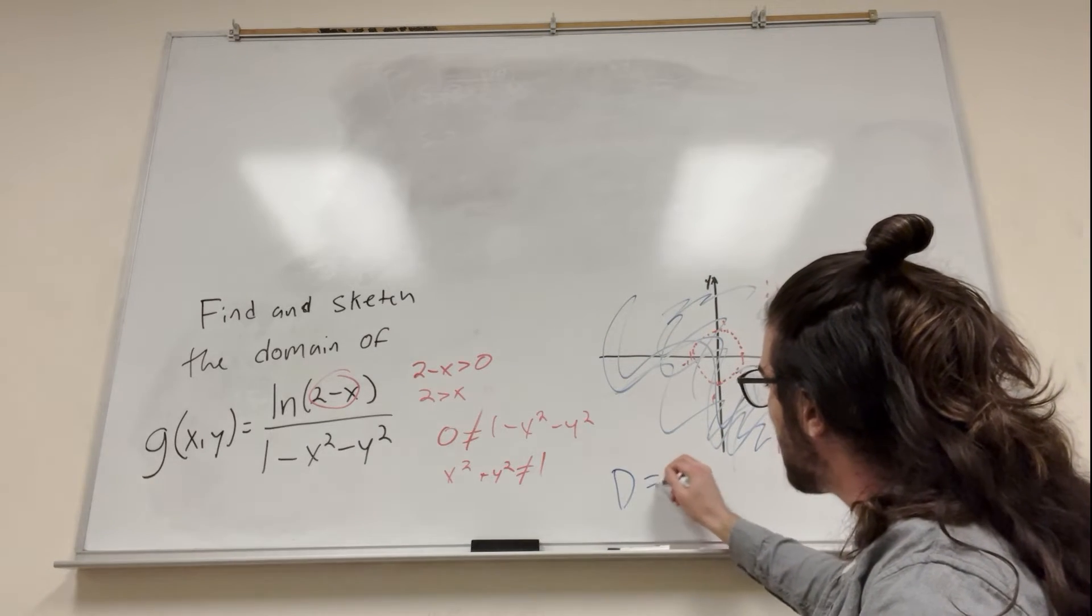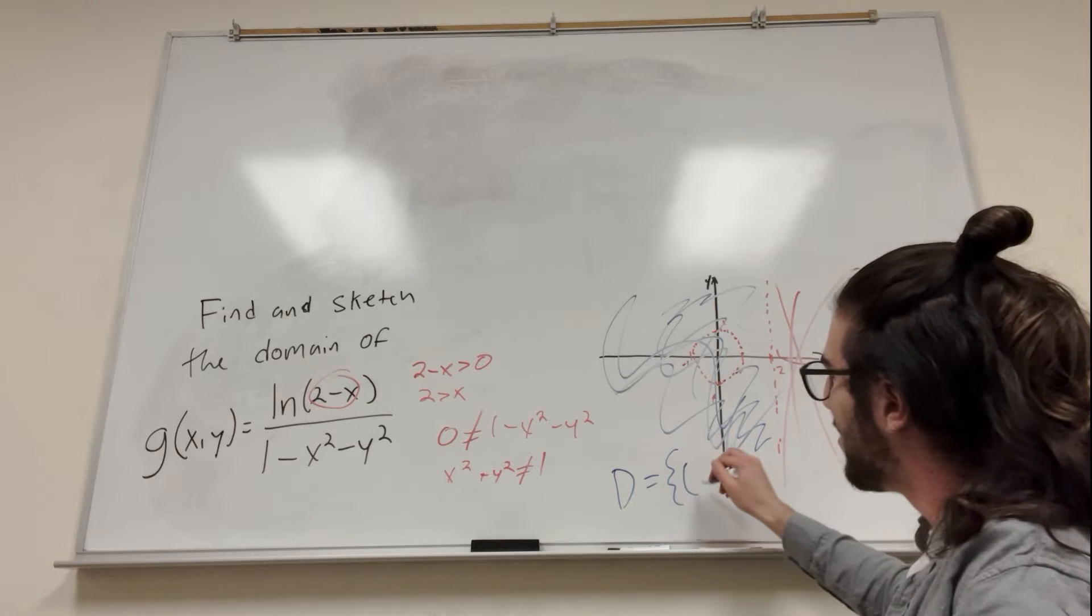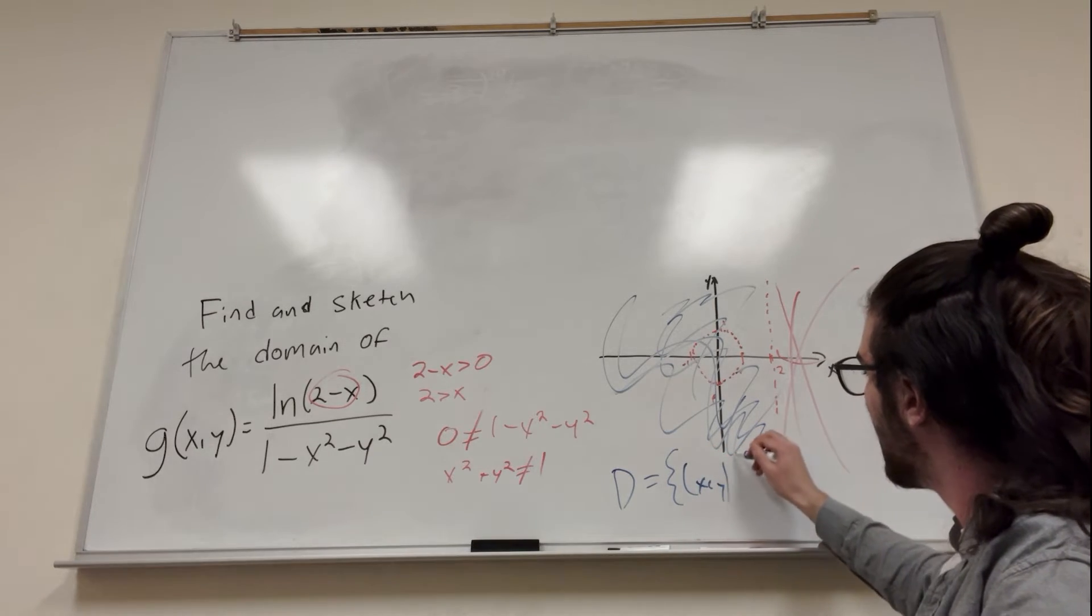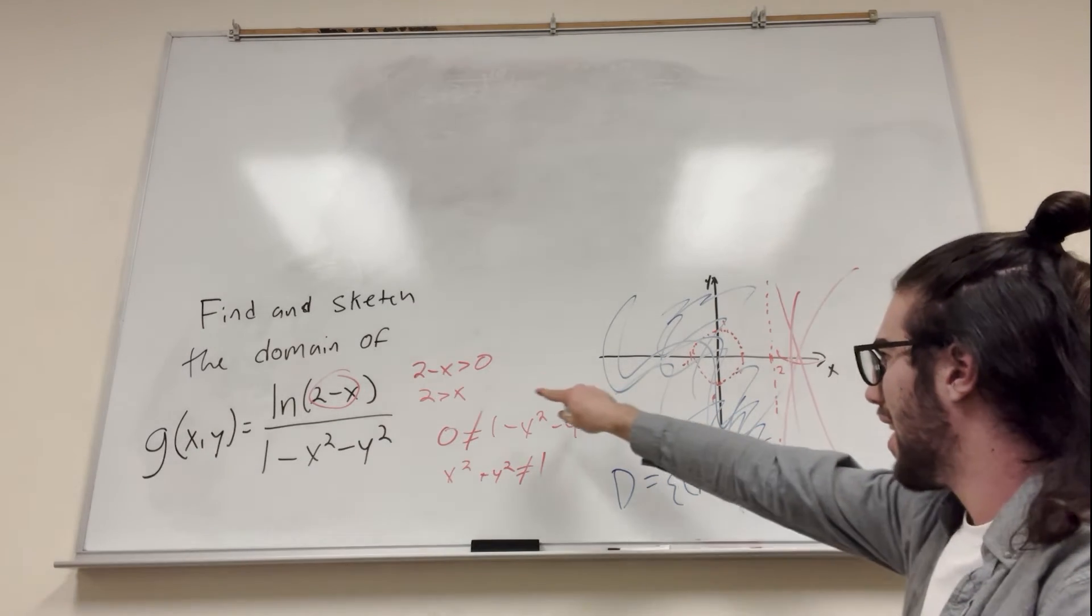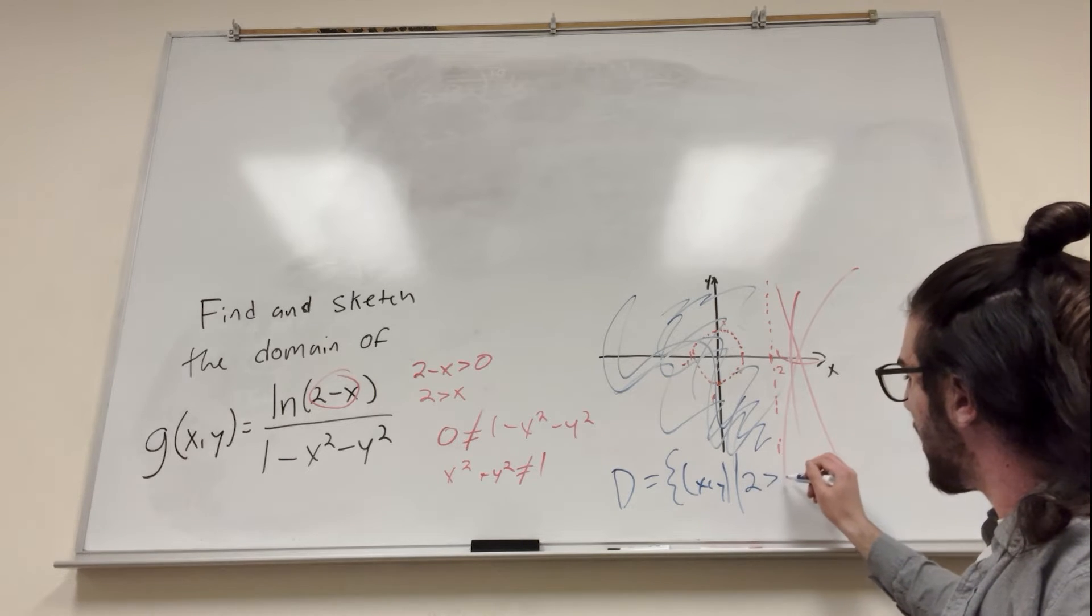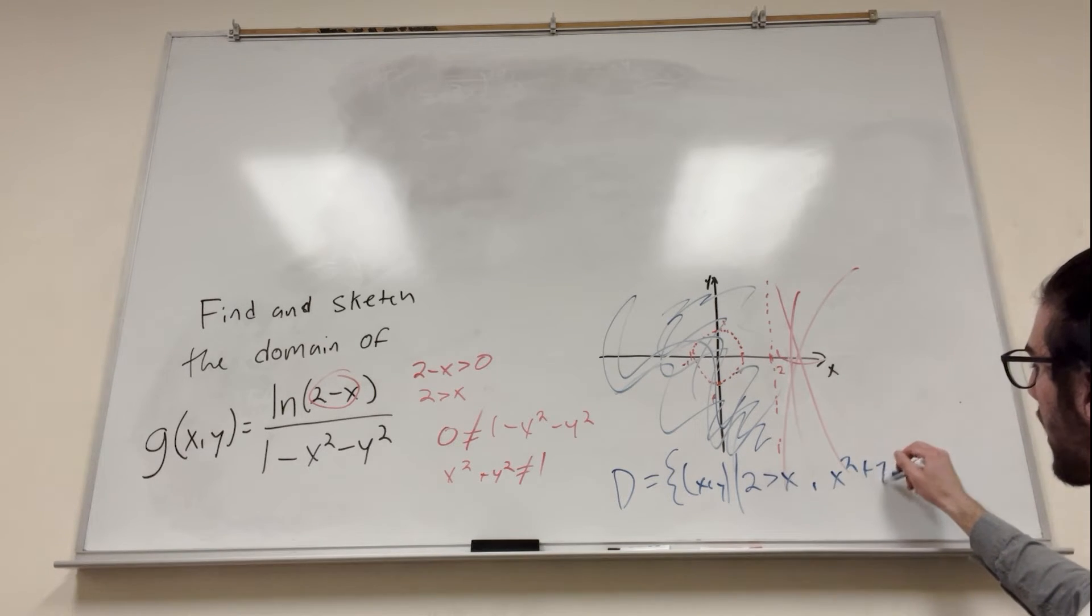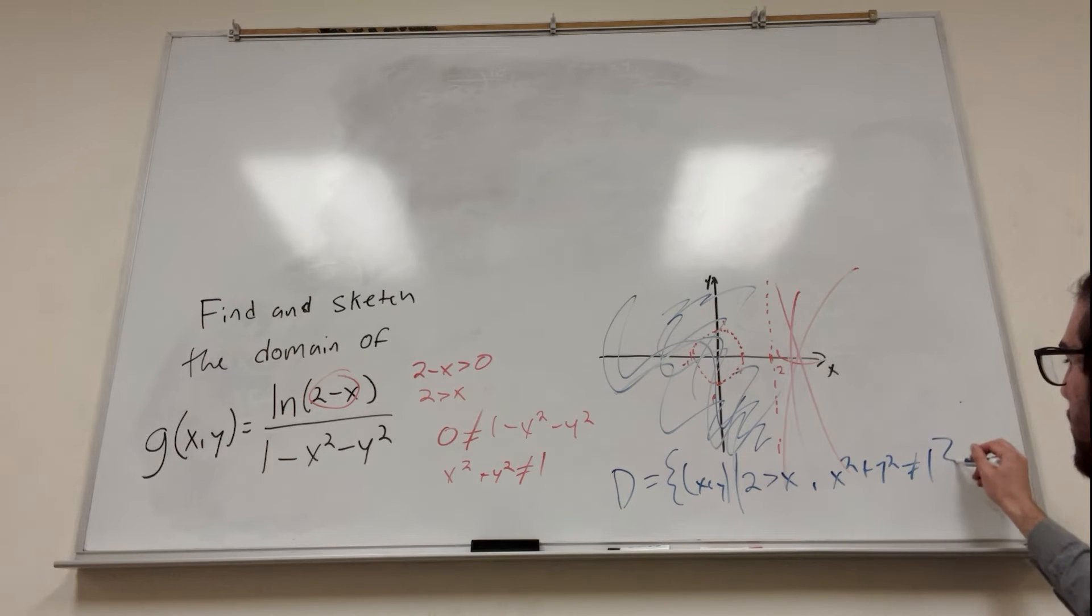So what you want to do is domain equals, curvy thing, put your functions, that's x and y. And then we have that 2 is greater than x, and x squared plus y squared is not equal to 1. And there you go, that's your domain right there.